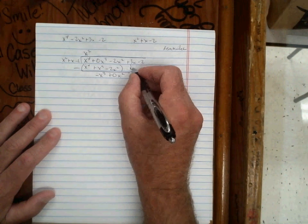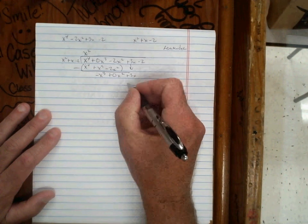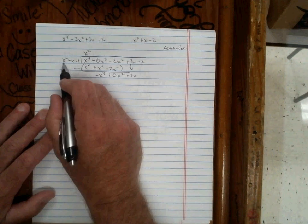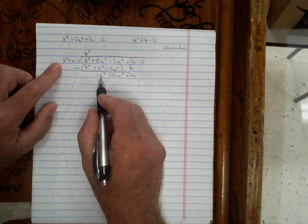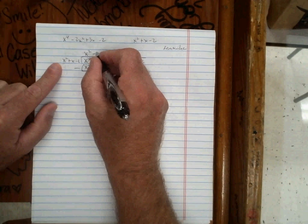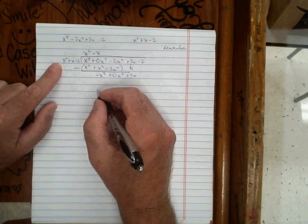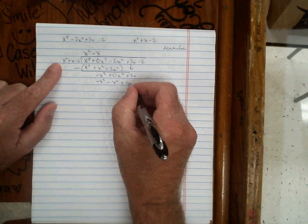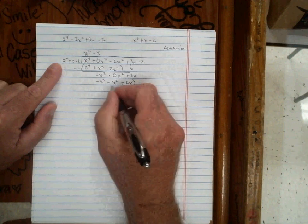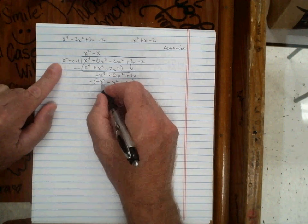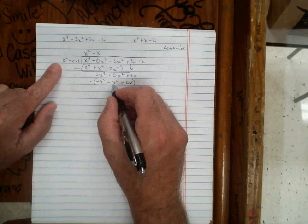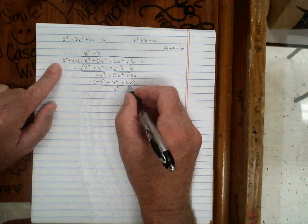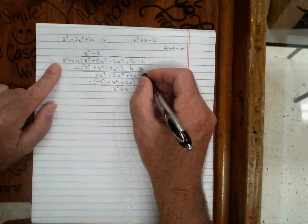We bring down the third term, plus 3x. We have three terms on the outside, so we want three terms here. Ask ourselves: what times x squared makes negative x cubed? That's going to be negative x. Multiply that times what's outside to get negative x cubed minus x squared plus 2x, and subtract all that. It cancels. 0x squared minus negative x squared makes positive x squared, and 3x minus 2x makes positive x.